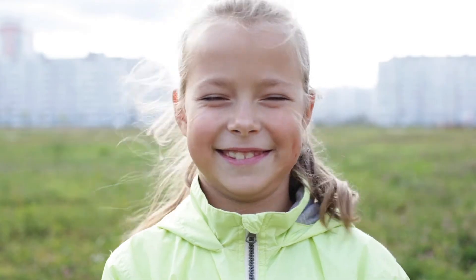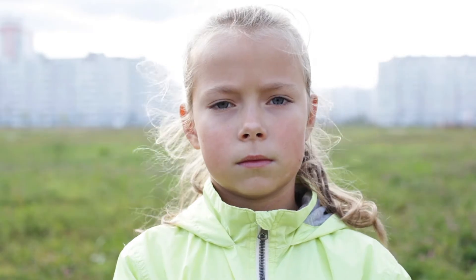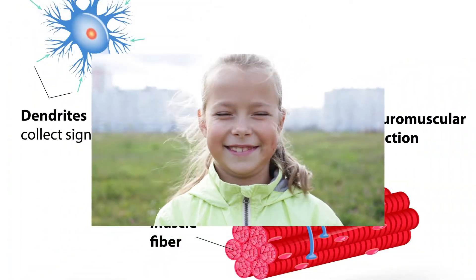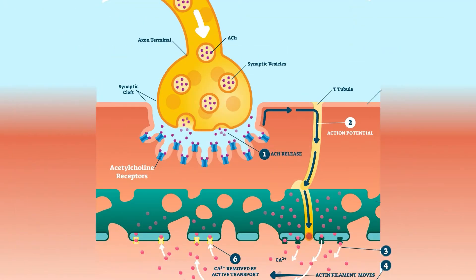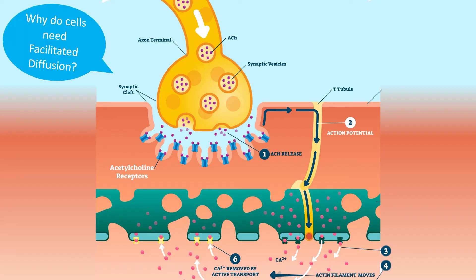You have 43 muscles in your face. It takes all 43 of those muscles to frown, but it only takes 17 of those muscles to smile. What you probably didn't know is that just to send a signal to your muscles, an entire system of membrane proteins is needed. Without facilitated diffusion, you couldn't do either of these things.